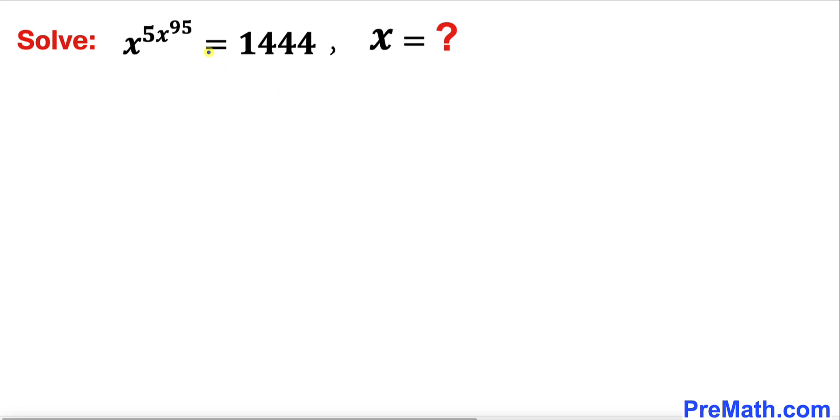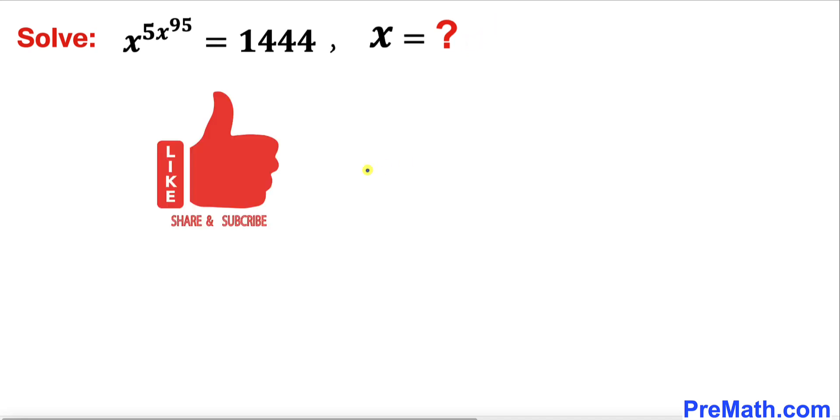Welcome to pre-math. In this video we are going to solve this given exponential equation x power 5 times x power 95 equals to 1444, and in other words we are going to find the value of x. Please don't forget to give a thumbs up and subscribe.